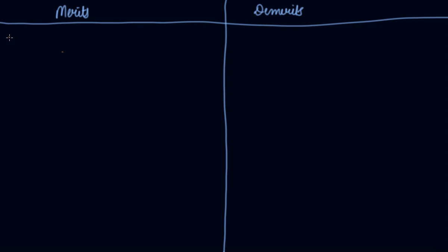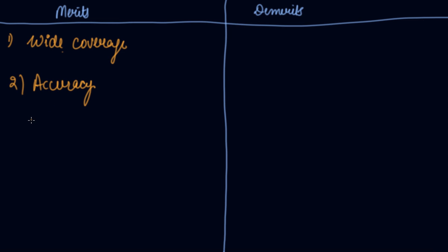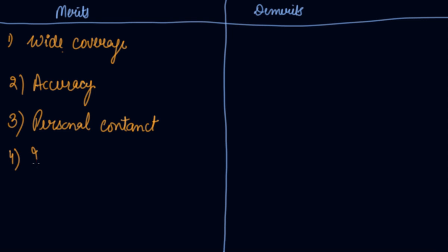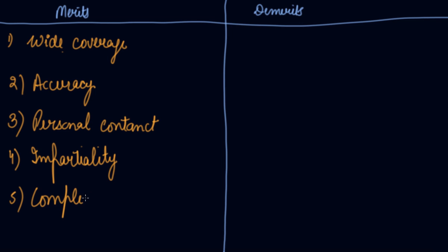The merits of the enumerators method: first is wide coverage — you can cover a wide area through this method. Second is accuracy — since the enumerator collects information personally, there is personal contact between the enumerator and the informant, making the information more accurate. Third is impartiality — enumerators do not show partiality while collecting information. Fourth is completeness — complete information is obtained.